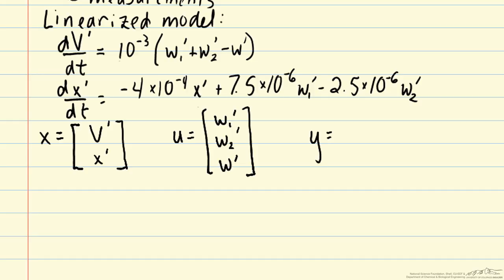And then finally we have our measurements. So this just depends on what we're going to measure. So here in this case let's assume that we will measure our disturbance variable W1 prime. So we won't be able to manipulate it but we will know what it is. And then we will also measure volume in the tank and our control variable, the mass fraction in the tank.